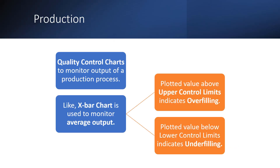In production, statistics is used in quality control charts to monitor the output of a production process. For example, the X-bar chart is used to monitor average output. A plotted value above the upper control limit indicates overfilling, and a plotted value below the lower control limit indicates underfilling.